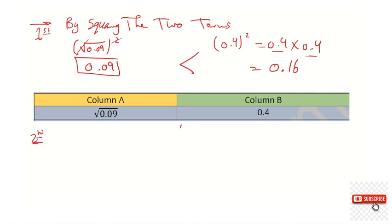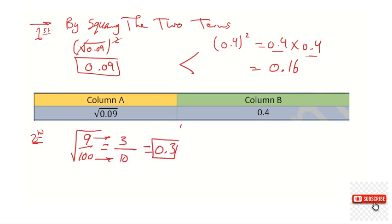The second solution is by taking the root of 0.09 directly. Root of 9/100: the root of 9 is 3 and the root of 100 is 10, so this equals 0.3. Comparing 0.3 and 0.4, clearly 0.4 is bigger.